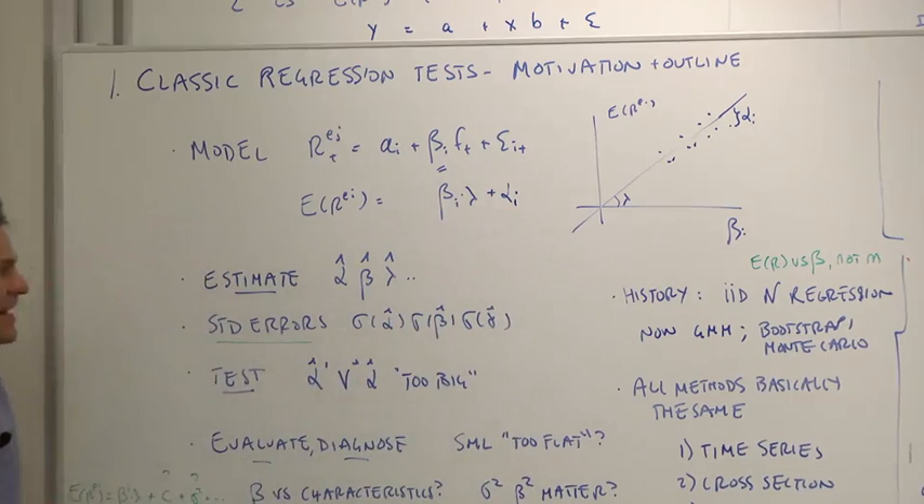I wrote the alphas usually we write them here, I put them there to emphasize that the alphas are errors of the model. So the point of the model is that expected returns should be related to betas, there should be a line there with slope lambda, and the alpha is the way the model is wrong, the deviation from the model's prediction of expected returns.